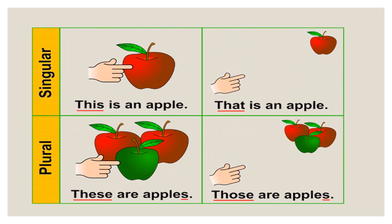Let's revise. If I have a singular noun and it's near, I can say 'This is an apple.' If I have one item which is far, I can say 'That is an apple.' For plural nouns, if I have many near, I can say 'These are apples.' If I have many items and they are far, I can say 'Those are apples.'